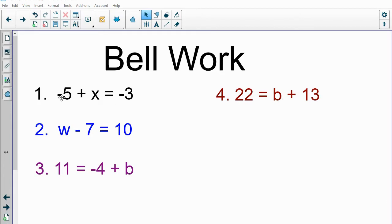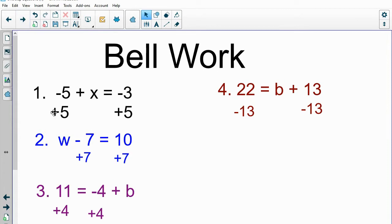So what we need to do is go through each problem and figure out what inverse operation we need to perform in order to isolate the variable by itself. So those inverse operations would look like this: add 5 to both sides on number one, add 7 to both sides on number two, add 4 to both sides on number three, and subtract 13 from both sides on number four.